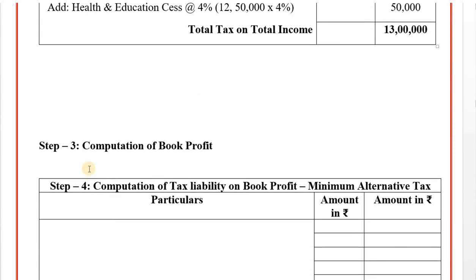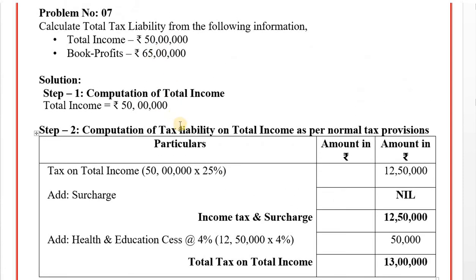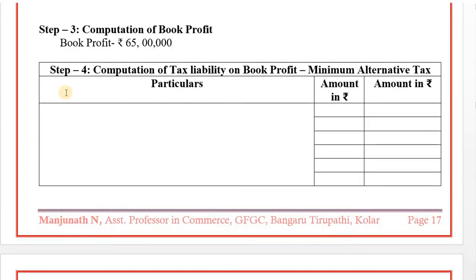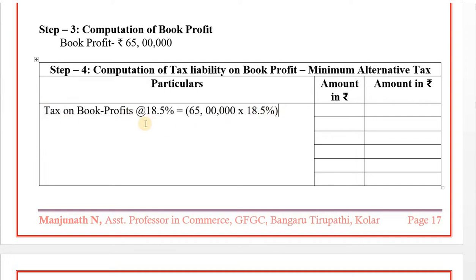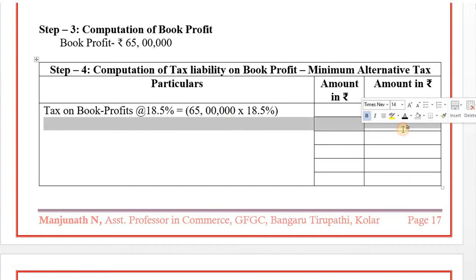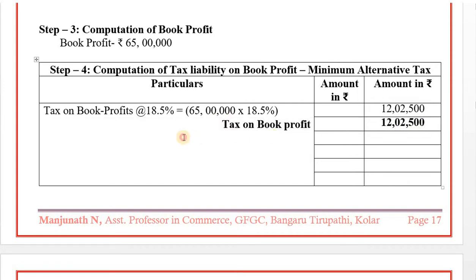Step 3: computation of book profit. Book profit is given in the problem — 65 lakhs. Step 4: computation of tax liability on book profit. Rate of tax on book profit is 18.5 percent. 65 lakh into 18.5 percent — it comes to 12 lakh 2,500. This is the total income tax on book profit.